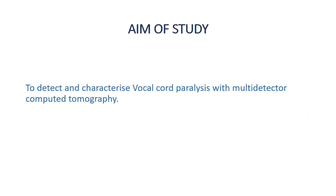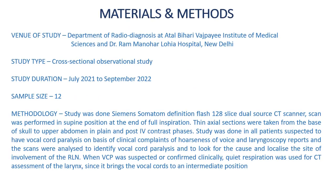The aim of our study was to detect and characterize vocal cord paralysis with multi-detector computed tomography. Materials and methods: the venue was the Department of Radio Diagnosis at ABVIMS and Dr. RML Hospital, Delhi. It was a cross-sectional observational study done from July 2021 to September 2022. The sample size was 12, performed using a Siemens Somatom Definition Flash 128-slice dual-source CT scanner in supine position at the end of full inspiration. Thin axial sections were taken from the base of skull to upper abdomen in plain and post-contrast phases, in all patients suspected to have vocal cord paralysis based on clinical complaints of hoarseness of voice and laryngoscopy reports. Scans were analyzed to identify vocal cord paralysis and to look for the exact cause and localize the site of involvement.